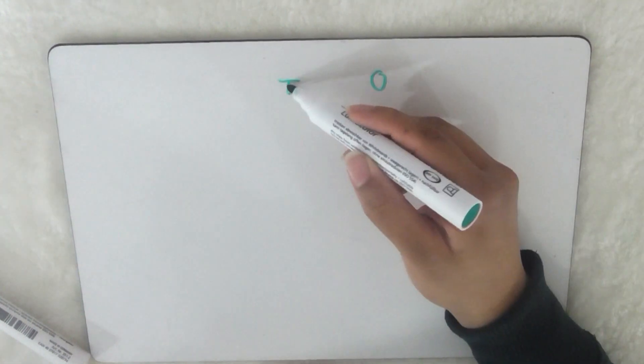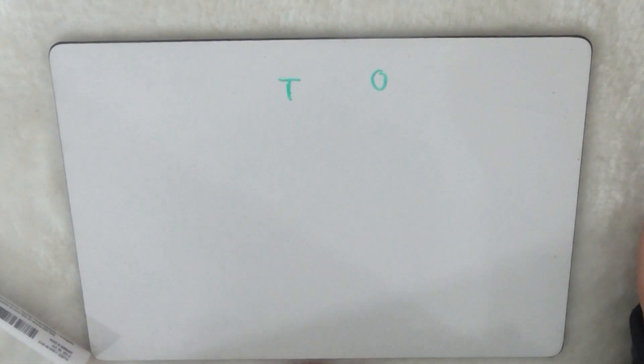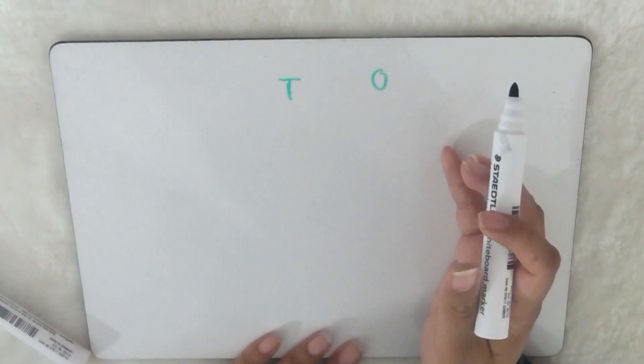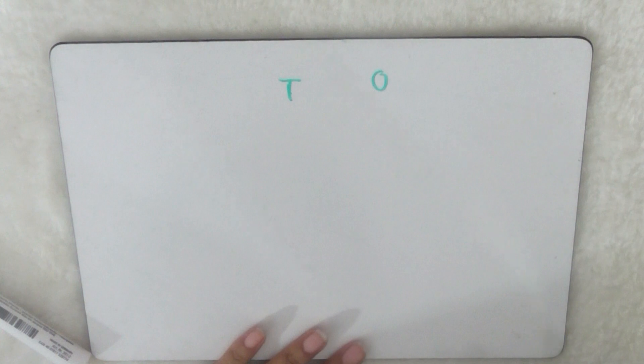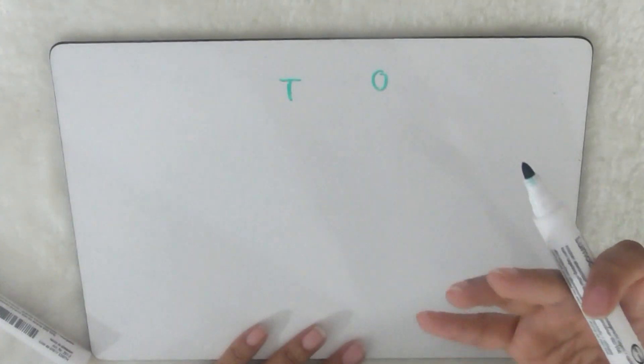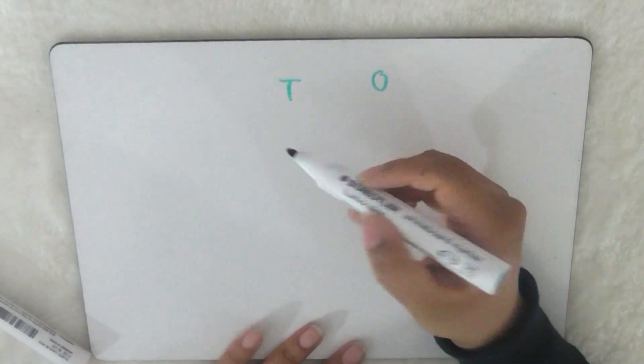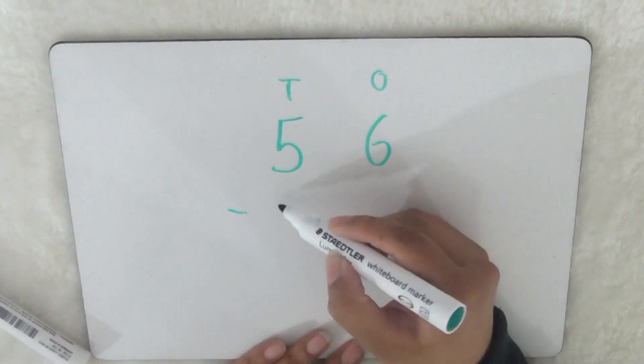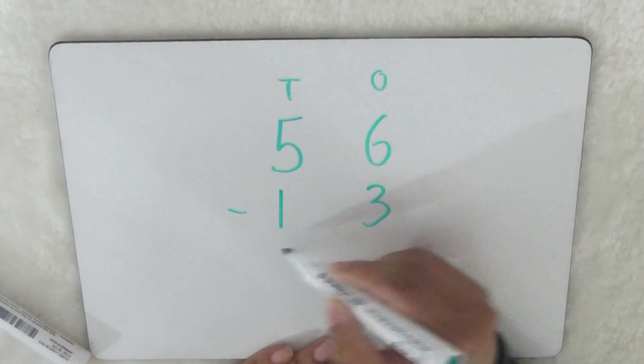I'm going to show you an example and then I'm going to give you some to have a go with. So the top number should always be the biggest number, just like with your regular subtraction the first number is always the biggest. So I'm going to do 56 take away 13 equals.